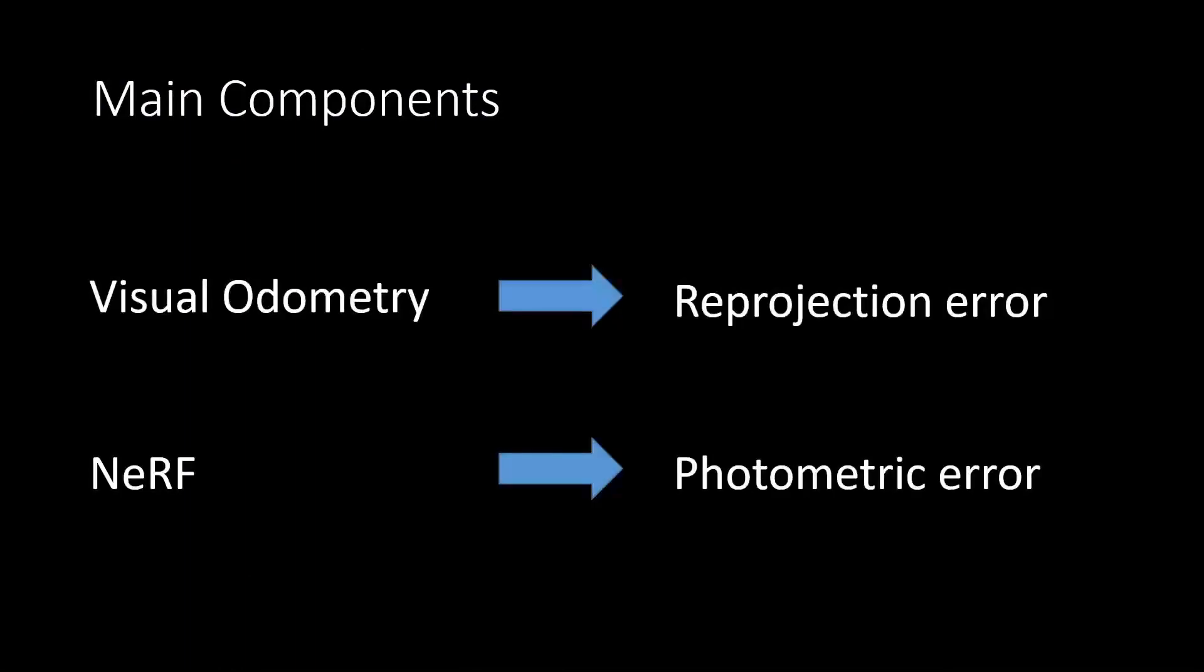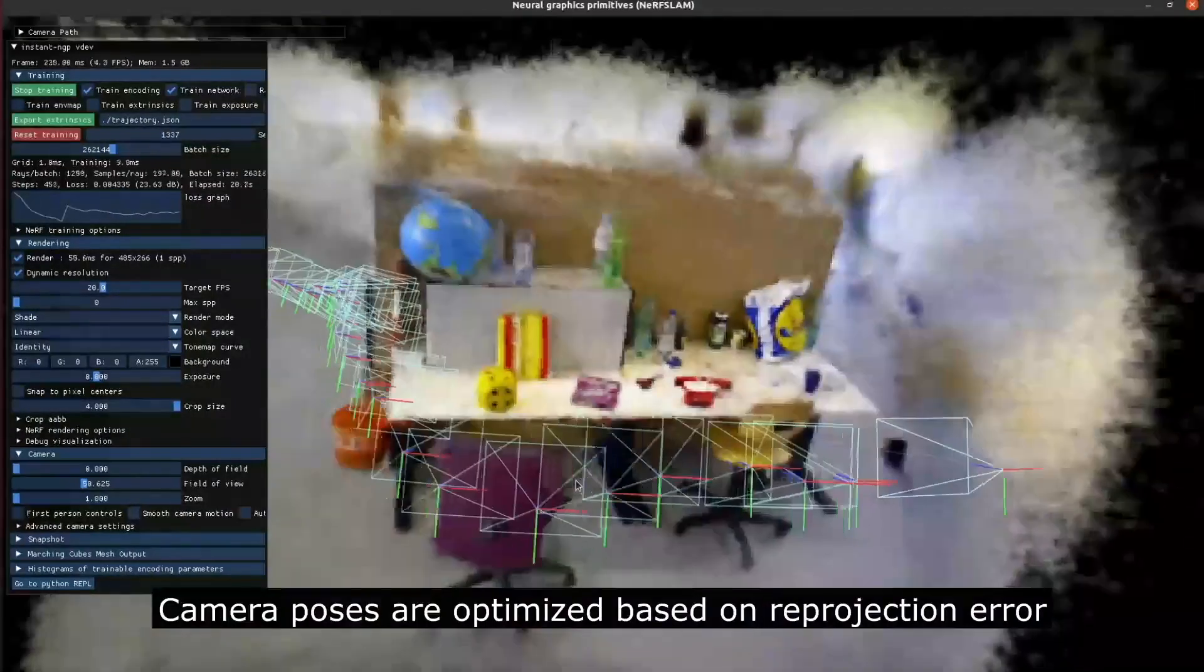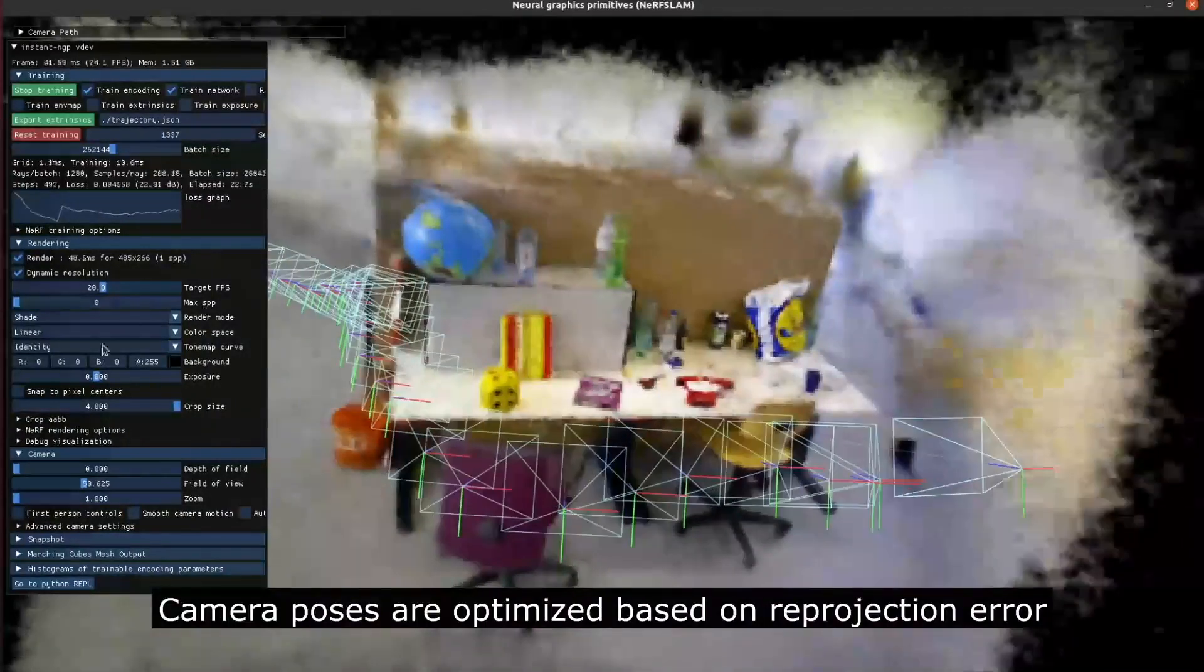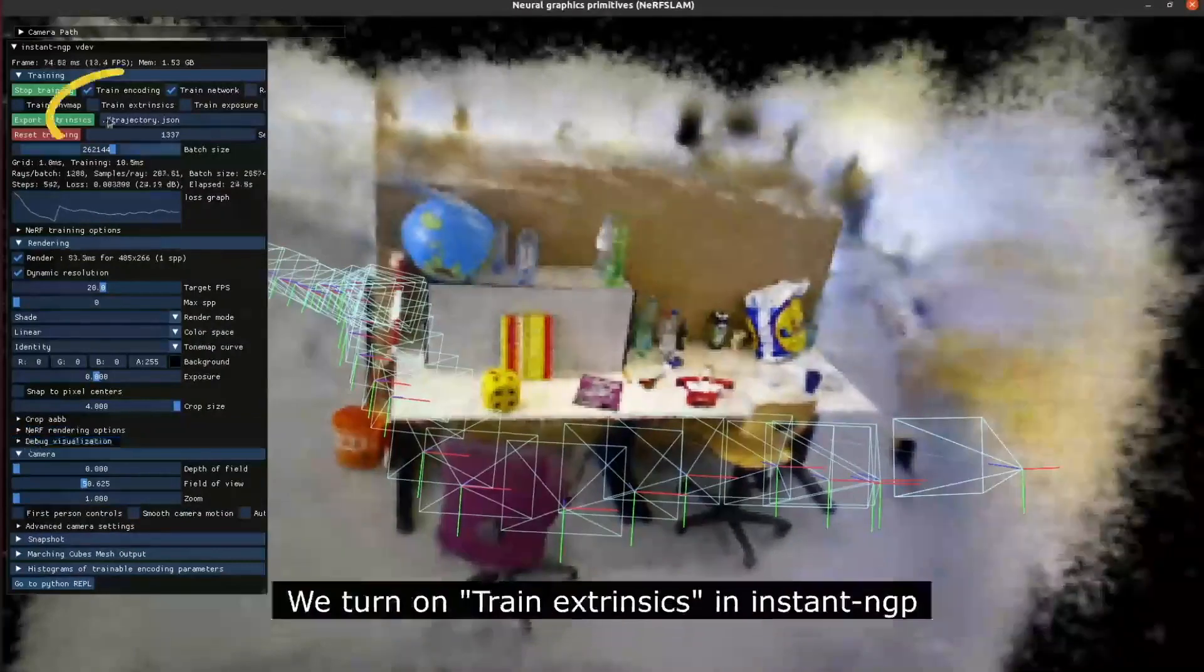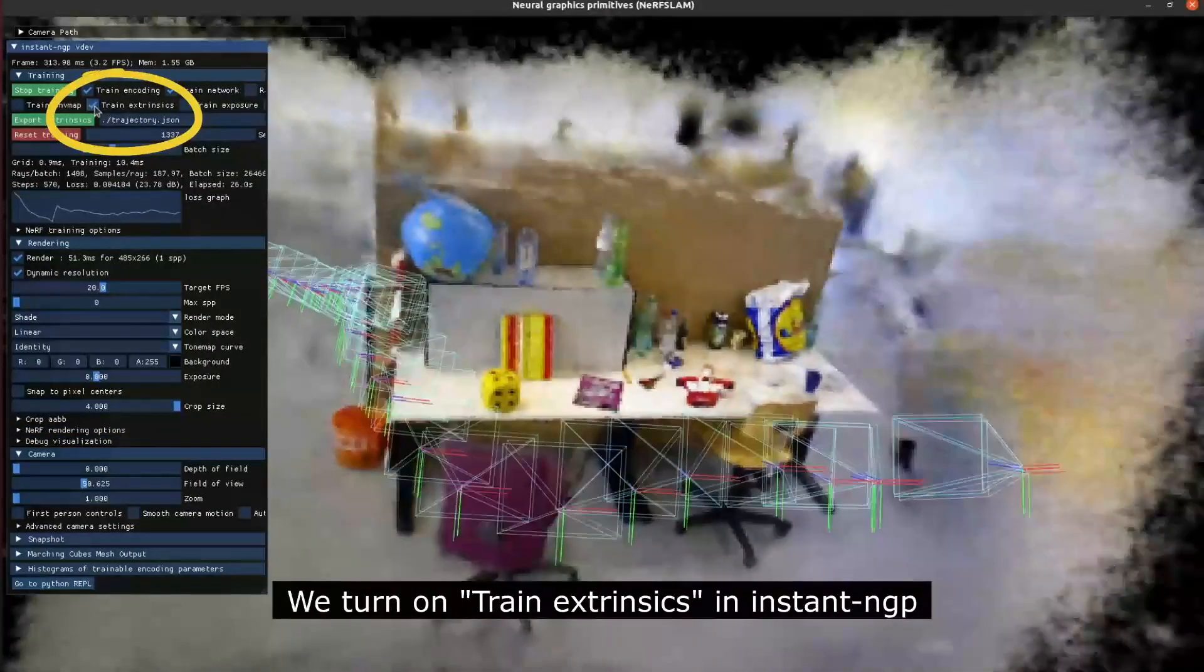The main components of Orbeez-SLAM are visual odometry and NeRF with reprojection and photometric error. Camera poses are optimized based on reprojection error. We turn on train extrinsics in Instant NGP.